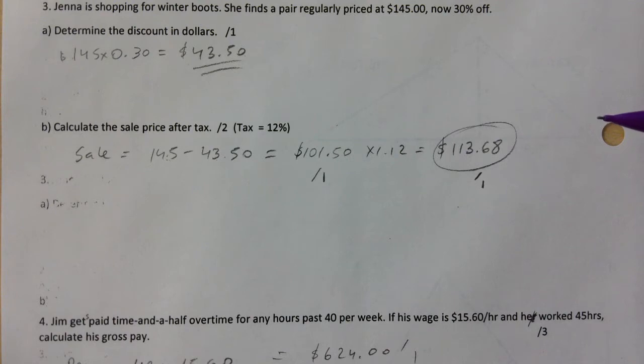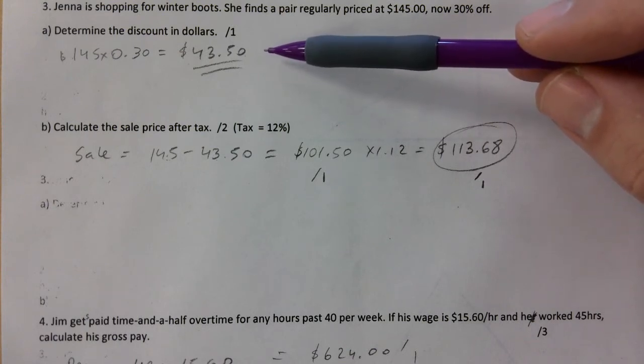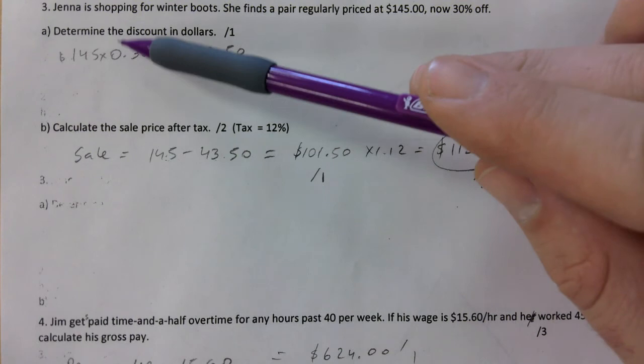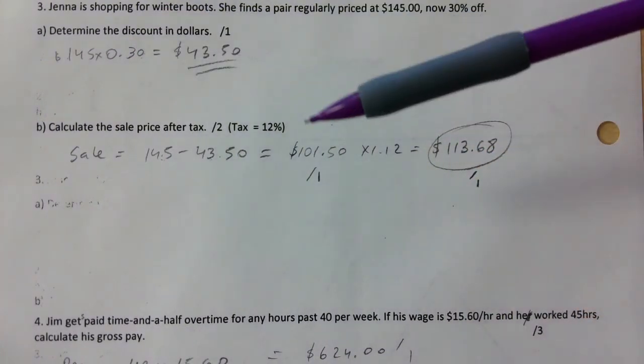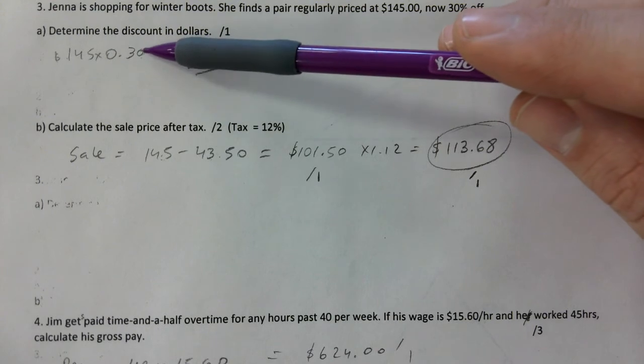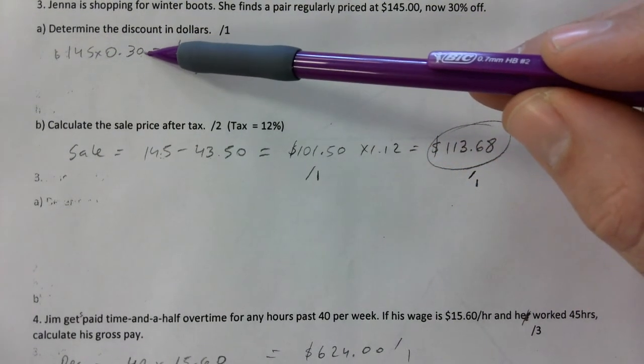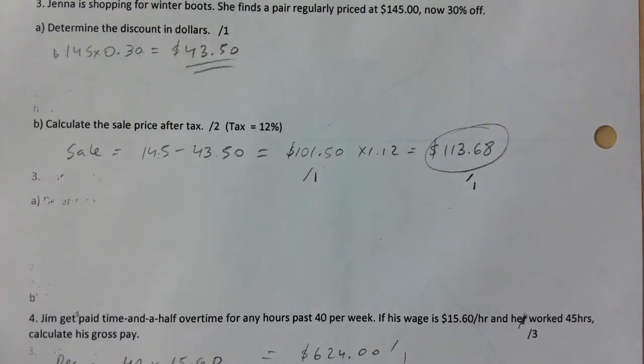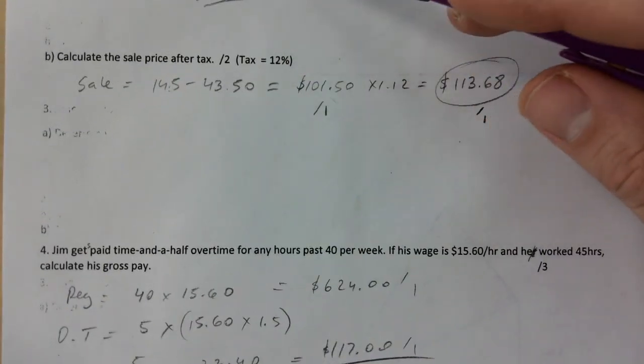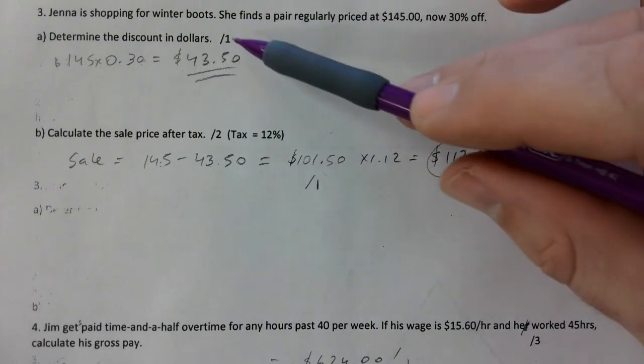So you figured out the sale price, essentially like how much it would be after the discount. So you use that here. What you probably did is $145 times 0.70, because you know 70 and 30 adds up to 100 percent. You figured out how much that person would pay after the discount. But if you're showing me this, you get half a mark here, so it's good that you got that right answer there. So one and one, so two marks for B, one mark for A. Question three is worth three marks in total.